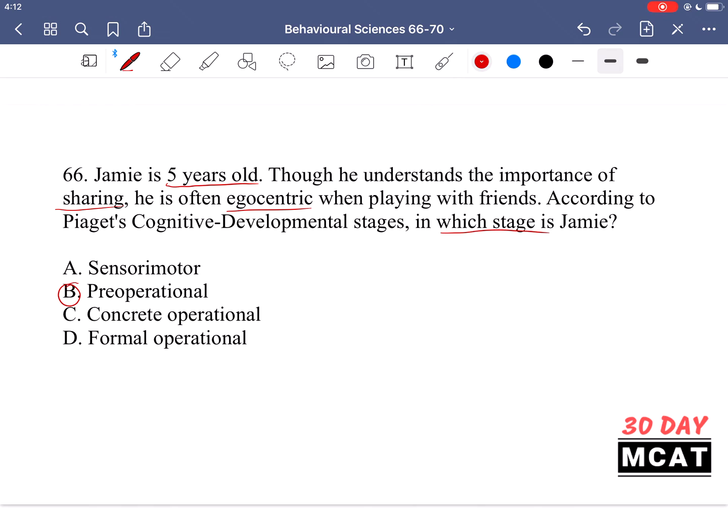This is option B, the pre-operational stage. So this requires knowledge of these different stages, according to Piaget. In the pre-operational stage, children can use symbols to think and communicate. But during this stage, they find it difficult to understand others' views and wishes. And that's why they are egocentric.